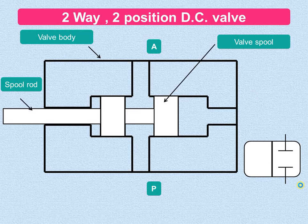In this video we will try to understand how the direction control valve works. The function of a direction control valve is to direct the flow of working fluid to the various places in the system. The direction control valve can be a one-way valve, i.e. check valve or shuttle valve, or a two-way, three-way, and four-way direction control valve. Each of these valves can be operated either manually, mechanically, electrically, or by some pilot arrangement.